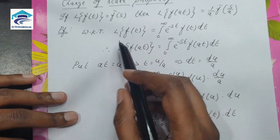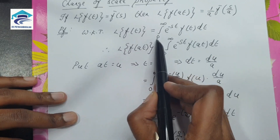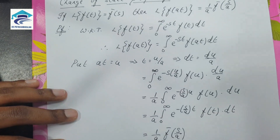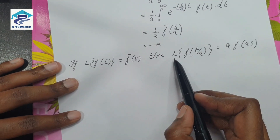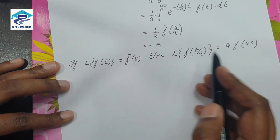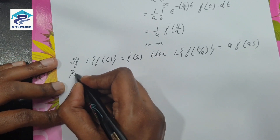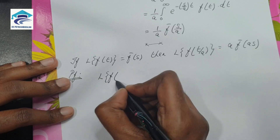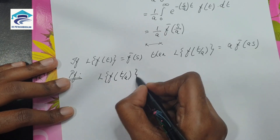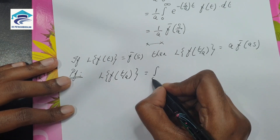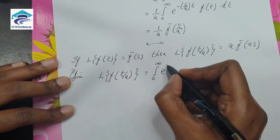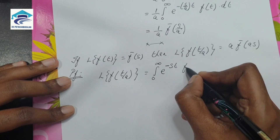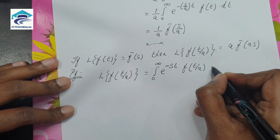We know the Laplace transform formula: L of f(t) is equal to the integral from 0 to infinity of e to the power minus st times f(t) dt. Therefore, what we need here is L of f(t/a). So L of f(t/a) is equal to the integral from 0 to infinity of e to the power minus st times f(t/a) dt.